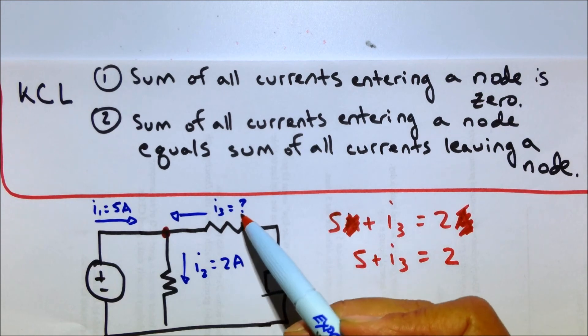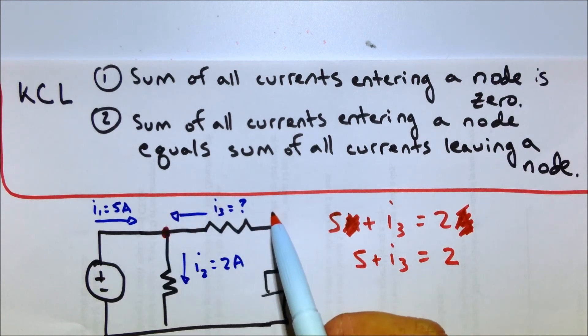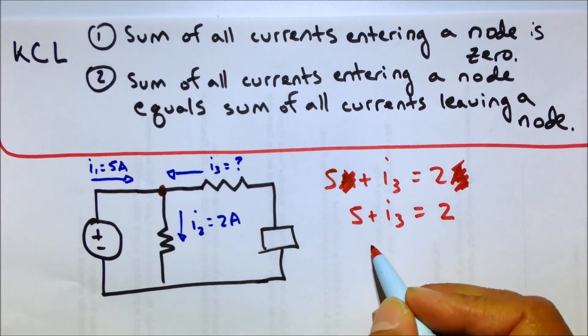Now, if we're wrong, and the current is really going out of the node, then this I3 will turn out to be negative, okay? So let's solve for I3.